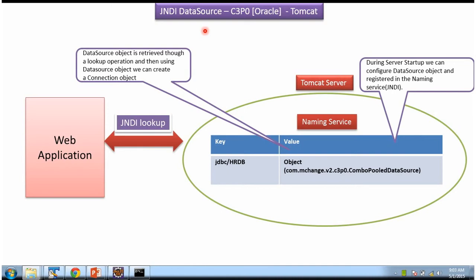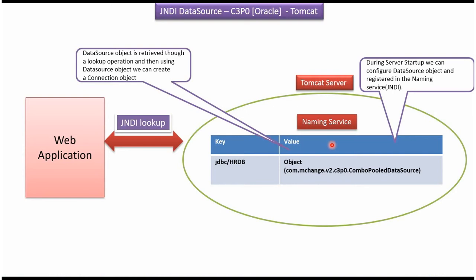In this video tutorial I will cover how to configure C3PO connection pool. During server startup we can configure the data source object and register it in the naming service. An example of a naming service is JNDI, where the key is JDBC/HRDB and the corresponding value is the C3PO data source object. From the web application, using a JNDI lookup we can get the data source object, then get the connection object and communicate to the database, like MySQL or Oracle. Now we will see how to configure it.